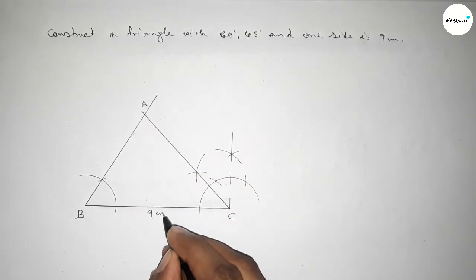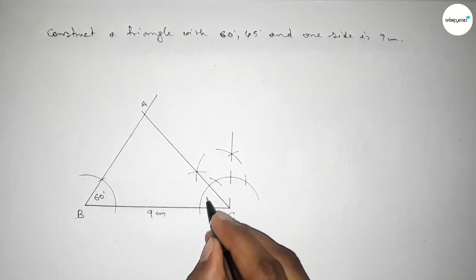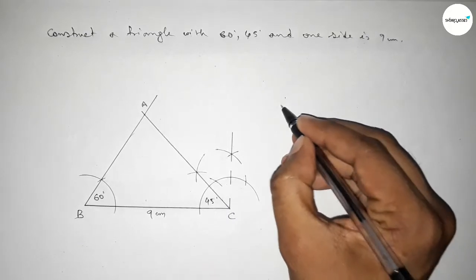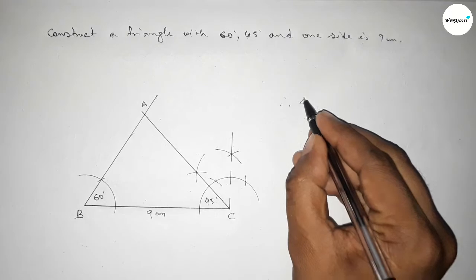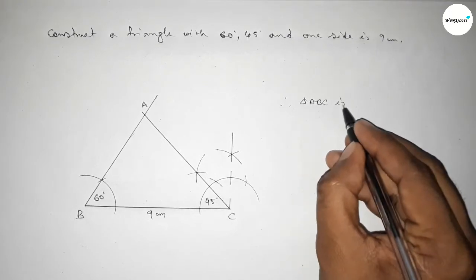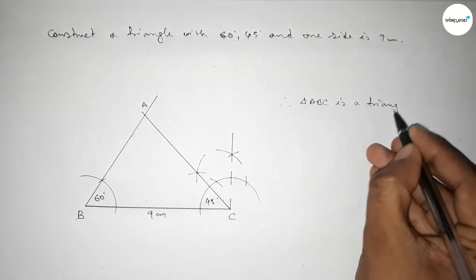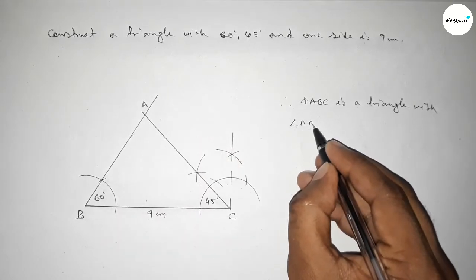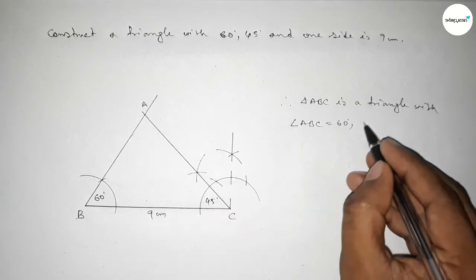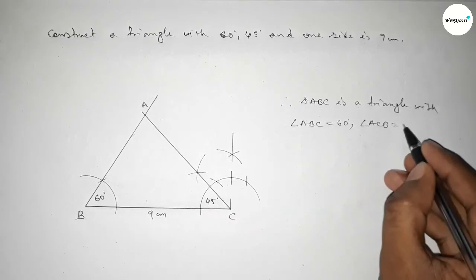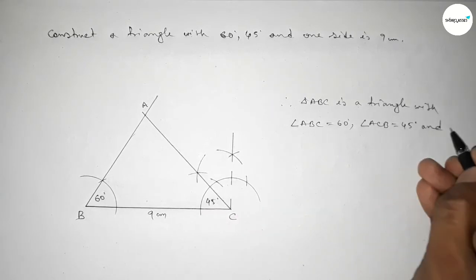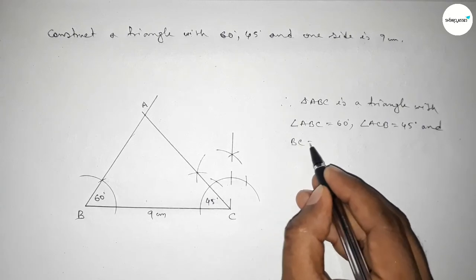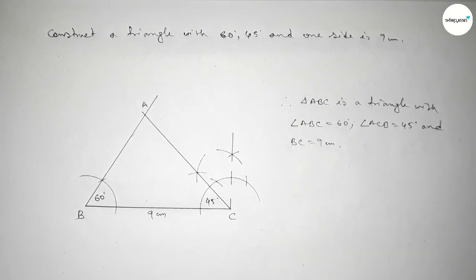This side is 9 centimeters, this angle is 60 degrees, and this angle is 45 degrees. Therefore, triangle ABC is constructed with two given angles: angle ABC equals 60 degrees, angle ACB equals 45 degrees, and given side BC equals 9 centimeters. That's all — thanks for watching, please share it with your friends.